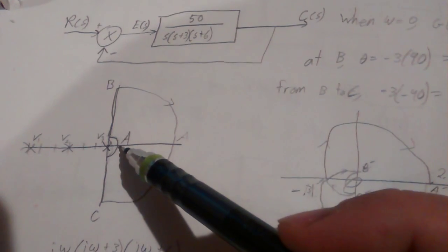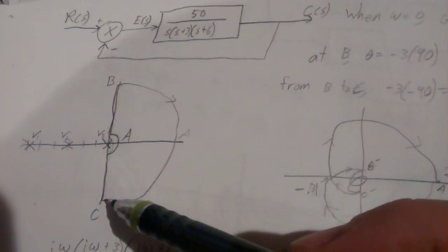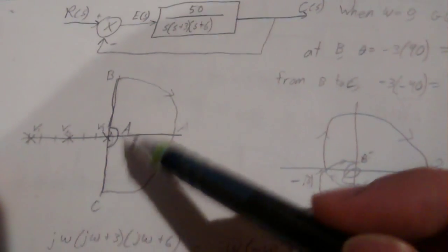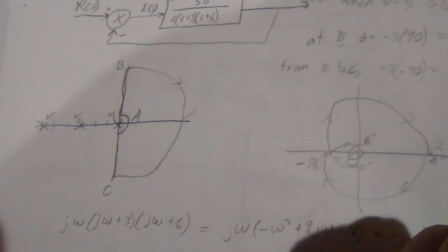We are interested in the points A, B, and C. If we can judge what's going on in those three points, we can probably sketch the Nyquist plot.